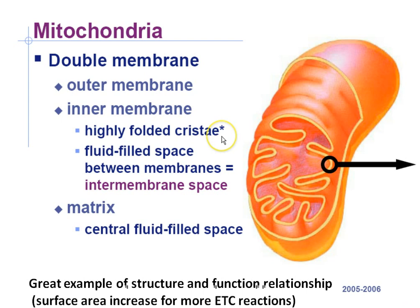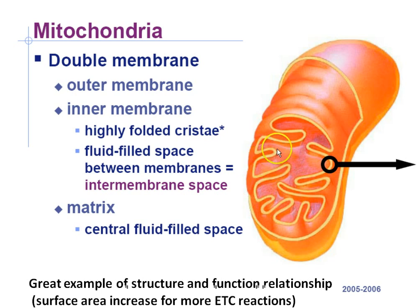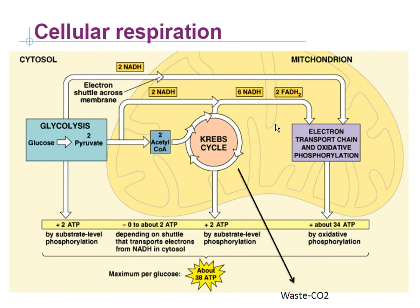The mitochondria has a double membrane. One thing you should know is that the cristae have lots of folds for increasing surface area to allow more of those carrier proteins — the electron transport chain — to make more ATP. Lots of places to carry out those chemical reactions. It's an example of the relationship between structure and function.